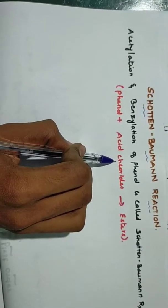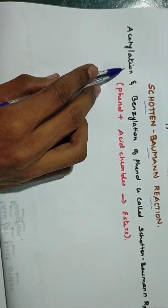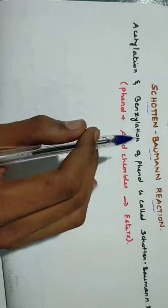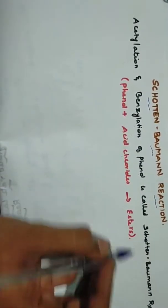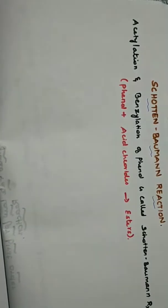This is phenol plus acid chloride. Acetylation means acid chlorides. Benzoylation means benzoyl chloride. If we react the two phenols, we have ester form. That is called Schotten-Baumann reaction.